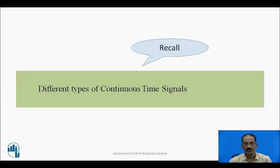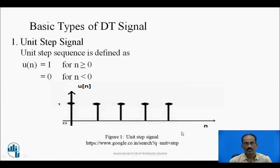The different types of continuous time signals include the step signal, ramp signal, parabolic signal, etc. The same signals will now be studied using discrete time signals. The basic types of discrete time signals: the first one is the unit step signal. The unit step signal is represented by u(n) and defined as u(n) = 1 for n ≥ 0, and 0 for n < 0.